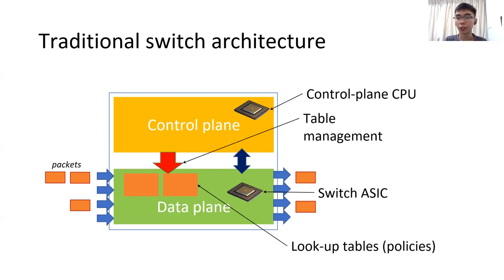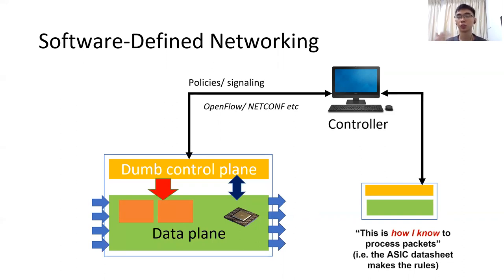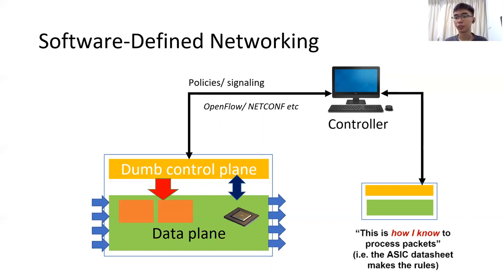So then we think about how we can make this better. We have software-defined networking, where we try to reduce the complexity in the control plane and have a centralized controller. With a centralized controller, each controller manages a group of underlying switches and has a global overview of all the underlying switch paths. The idea is to remove the complexity from the control plane and offload it to a centralized controller. Between the controller and the switch, communication happens through protocols such as OpenFlow. Although we have opened up the control plane, the capability of the switch is still constrained by the underlying data plane switch ASIC.